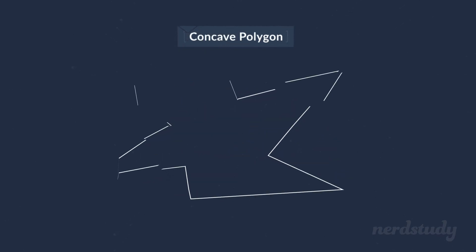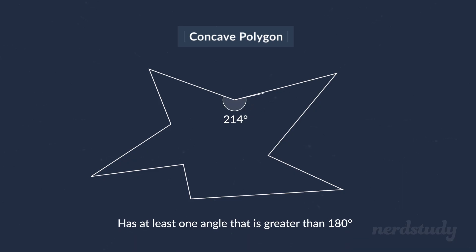A concave polygon, on the other hand, has at least one angle on the inside of the shape that is greater than 180 degrees. This shape, for example, which also happens to be irregular, is a concave polygon.